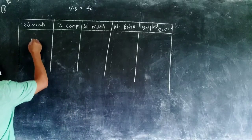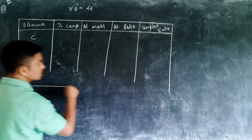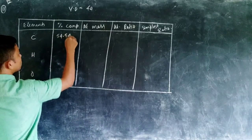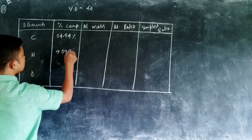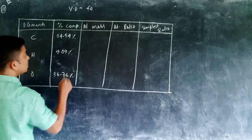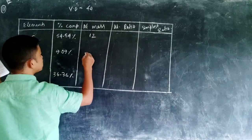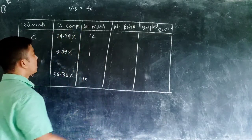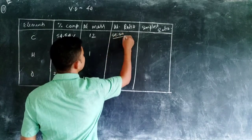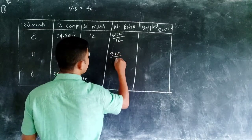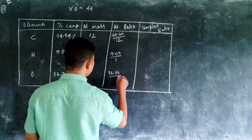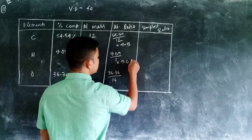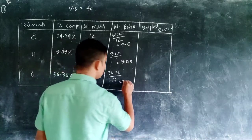The compounds present are carbon, hydrogen, and oxygen. Their percentage compositions are: carbon 54.54%, hydrogen 9.09%, and oxygen 36.36%. The atomic masses are: carbon 12, hydrogen 1, and oxygen 16. The atomic ratio is percentage composition divided by atomic mass. So: carbon is 54.54 ÷ 12 ≈ 4.5; hydrogen is 9.09 ÷ 1 = 9.09; oxygen is 36.36 ÷ 16 ≈ 2.27.